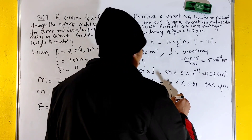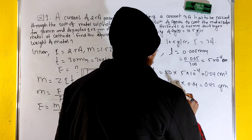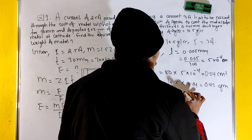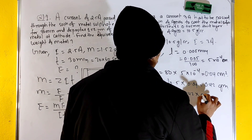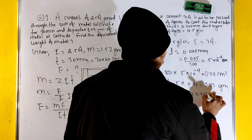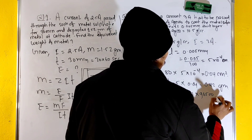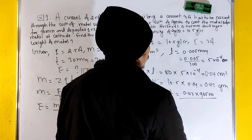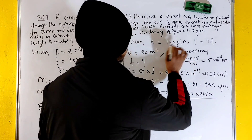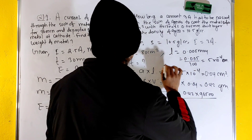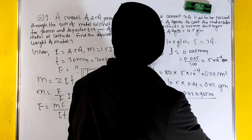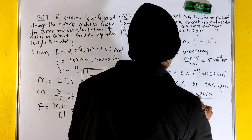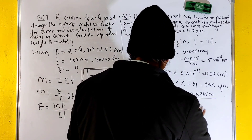Substituting: mass deposited is 0.42 grams, F is equal to 96500, current i is equal to 3 ampere. We calculate the time required for the electroplating process.